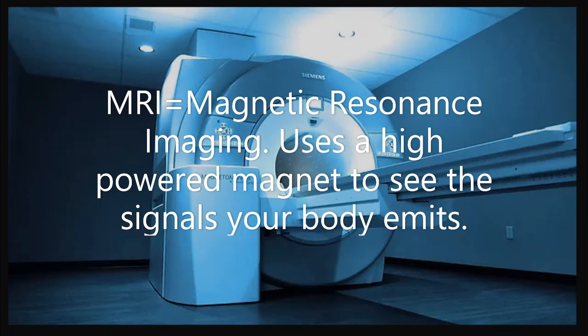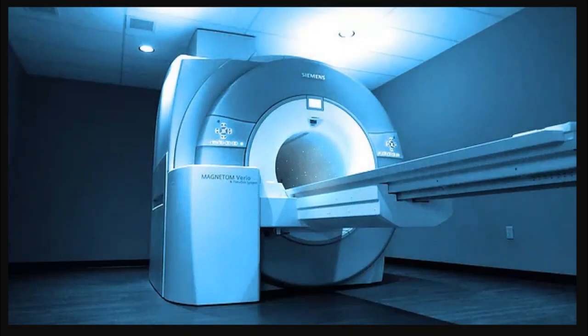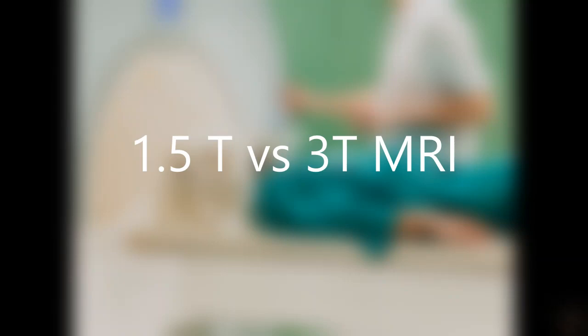There are several types of MRI machines. An example of the type of machine normally used for the brain is shown here. It is also important to know the strength of the MRI machine being used. Most commonly, facilities will use a 1.5 or 3T MRI. T stands for Tesla, which is a unit of measurement related to magnetic fields.